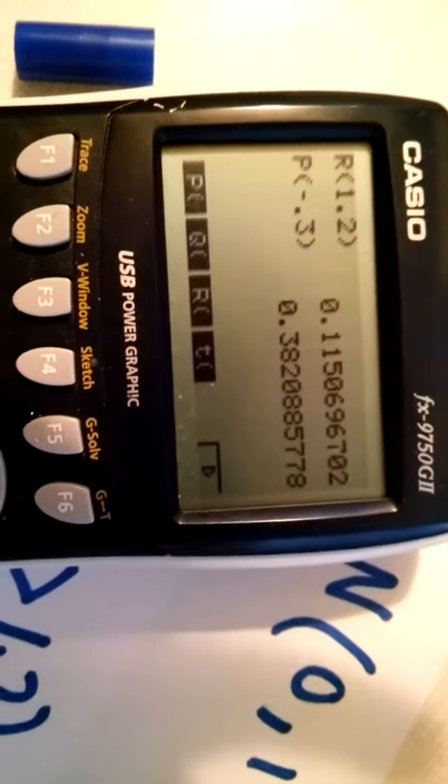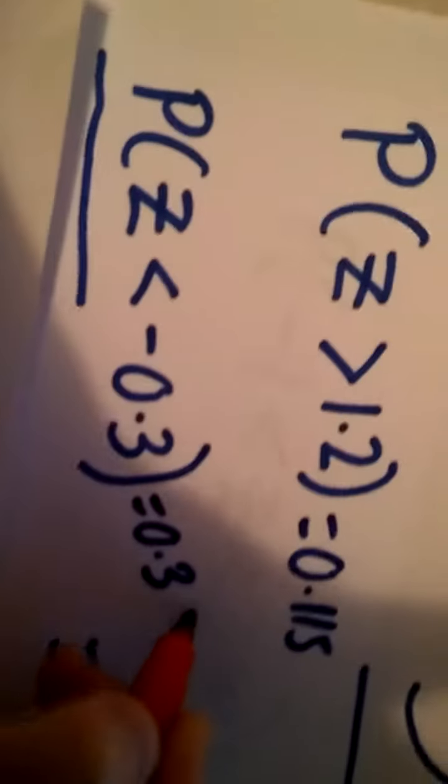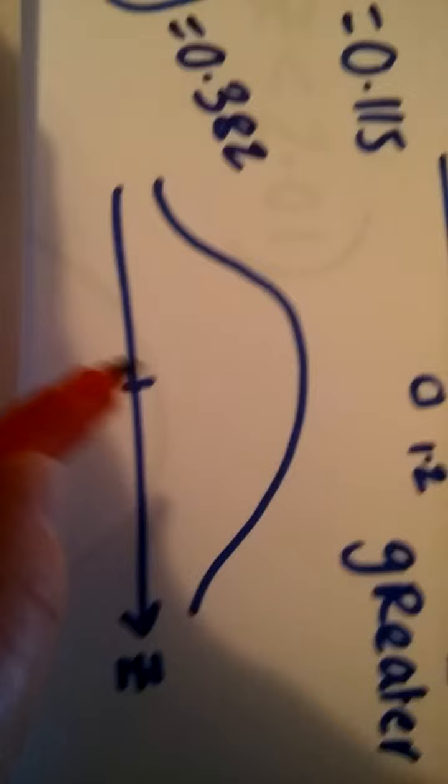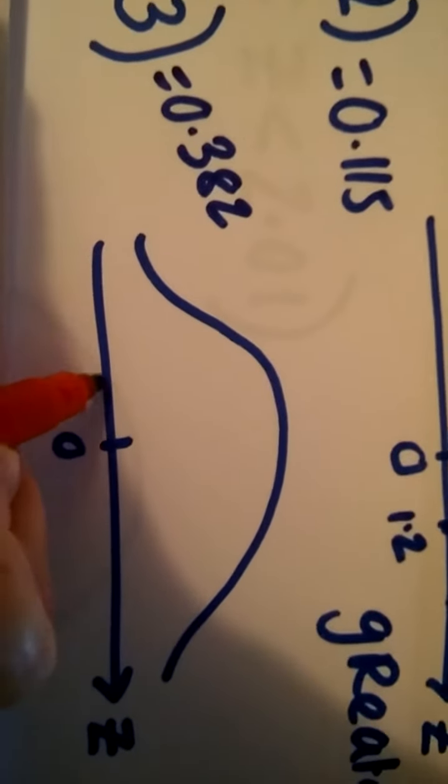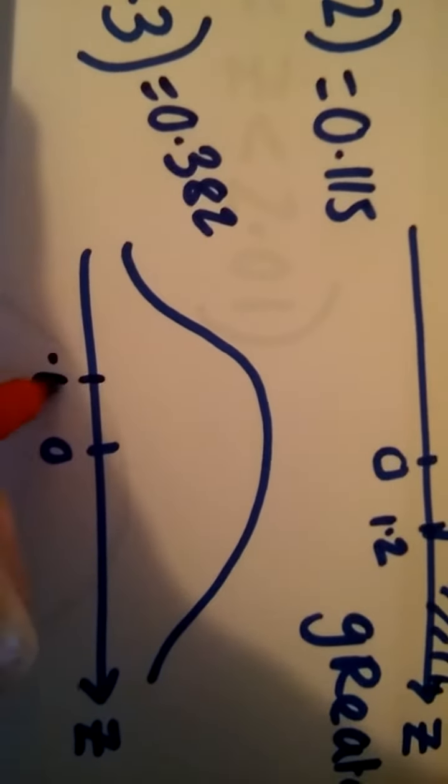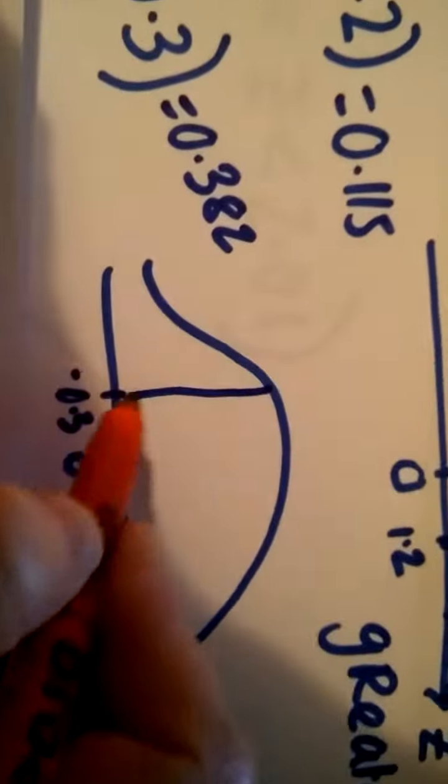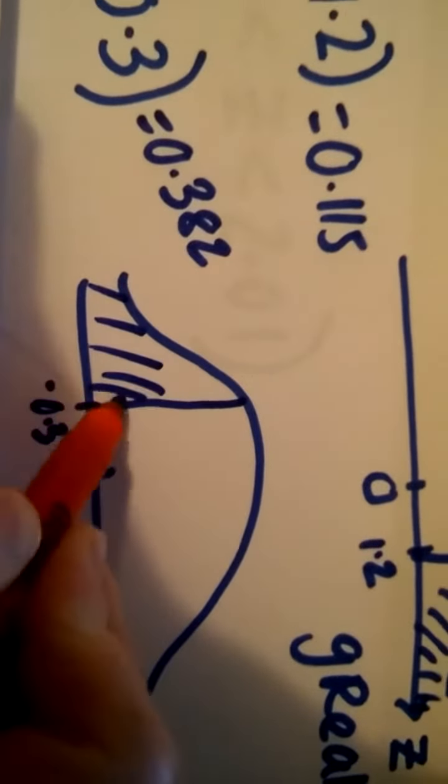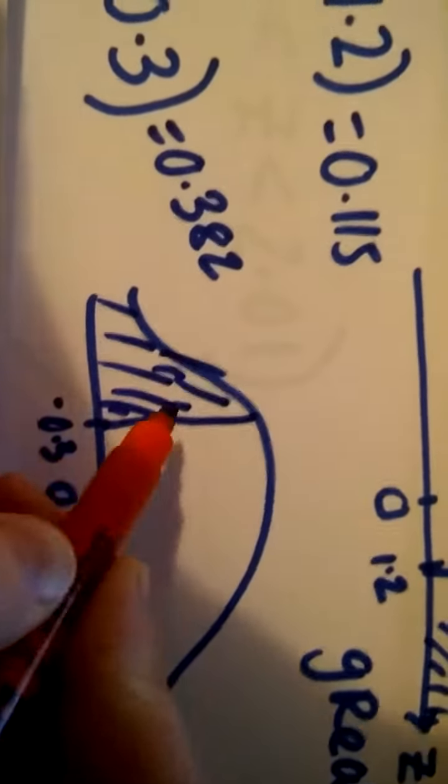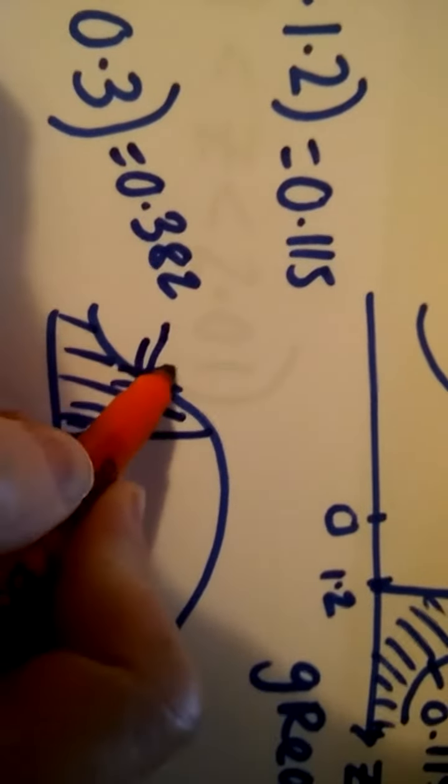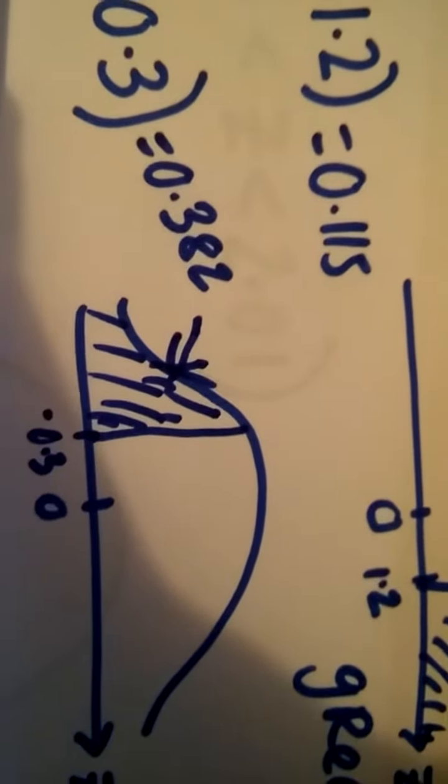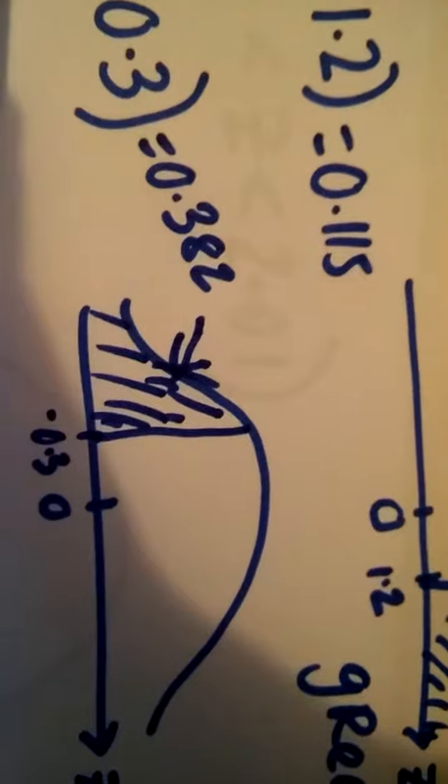And if we draw that on the picture, minus comes before zero so here may be minus 0.3, draw a line going up and that area there must be the 0.382.